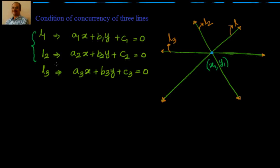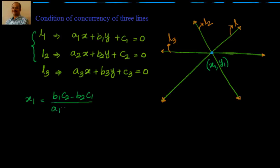We know that the point of intersection of these two lines, using the cross multiplication method, gives us x1 equal to (b1·c2 − b2·c1) / (a1·b2 − a2·b1).